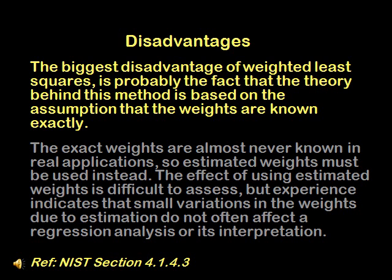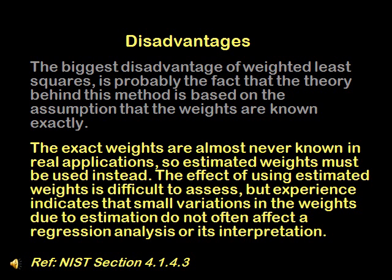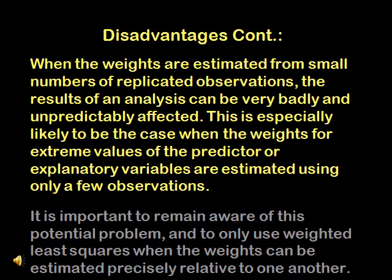According to NIST, the biggest disadvantage of weighted least squares is probably the fact that the theory behind this method is based on the assumption that the weights given are known exactly. The exact weights are almost never known in real applications, so estimated weights must be used instead. The small variations in the weights due to estimation do not often affect a regression analysis or its interpretation. However, NIST cautions that when the weights are estimated from small numbers of replicated observations, the results can be very badly or unpredictably affected. In simpler terms, when variables are estimated using only a few observations, the results can be very badly affected since the weights given are based on the variable values.